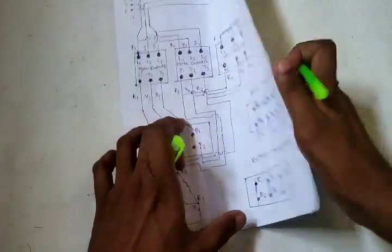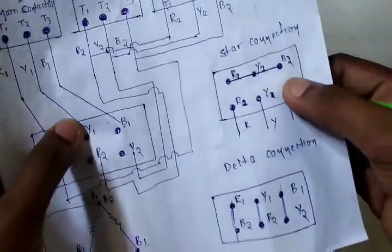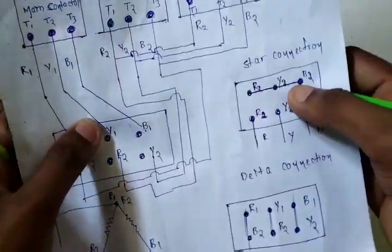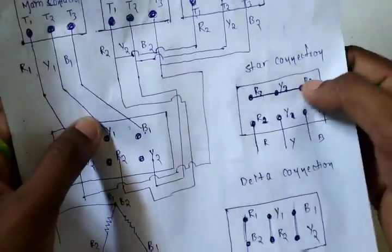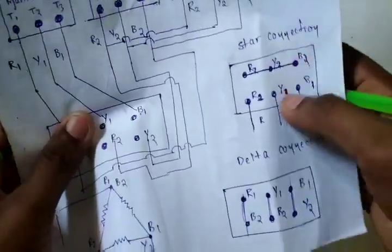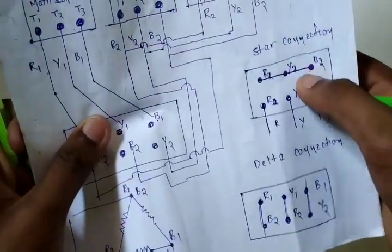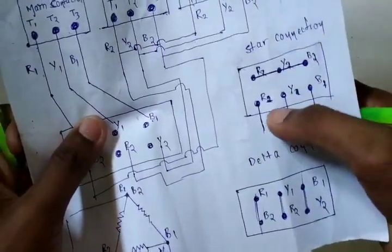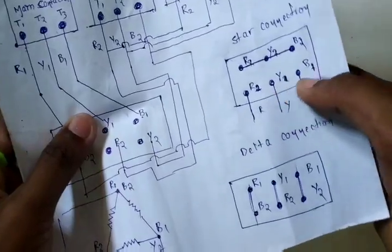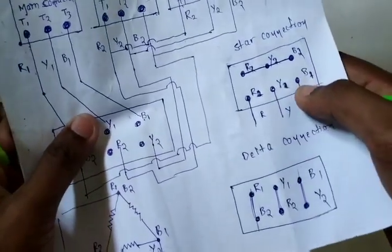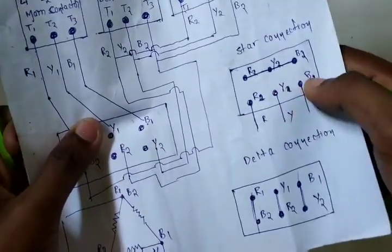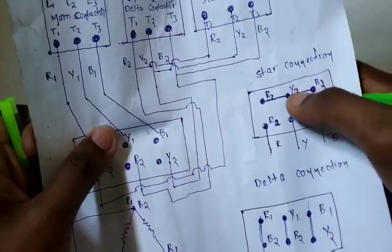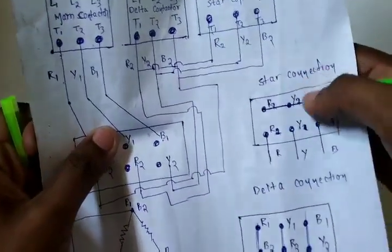This is the star connection to the star terminal. Now, if we find R2, Y2, B2 — short. R1, Y1, B1 — short. Then R1, B1, Y1 — short. Then R2, B2, Y2 — 3 phases of individual supply.